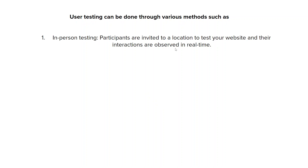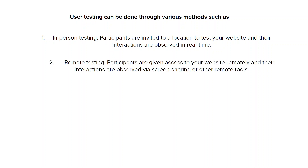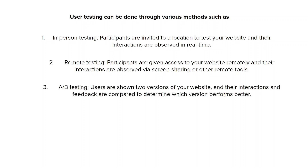User testing can be done through various methods such as in-person testing, where participants are invited to a location to test your website and their interactions are observed in real time. Then there's remote testing, where participants are given access to your website remotely and their interactions are observed via screen sharing or other remote tools. There's also A/B testing, where users are shown two versions of your website and their interactions and feedback are compared to determine which version performs better.